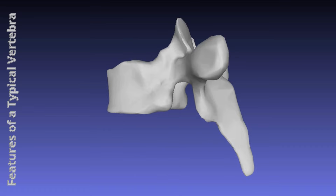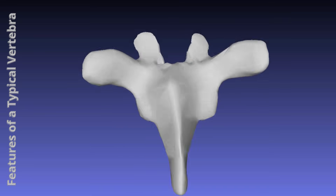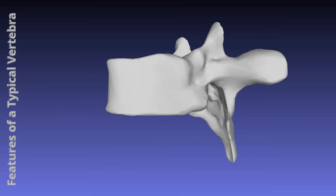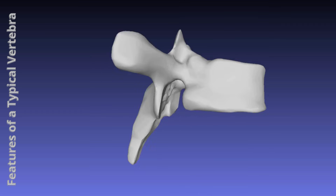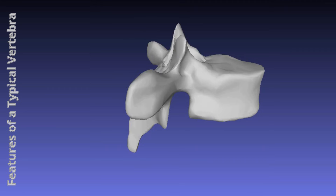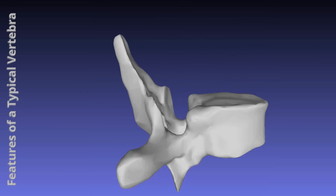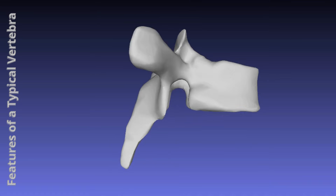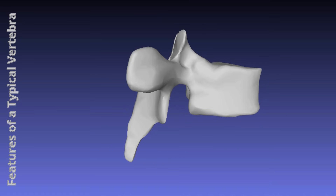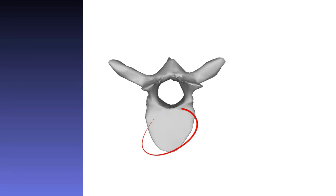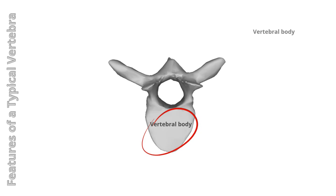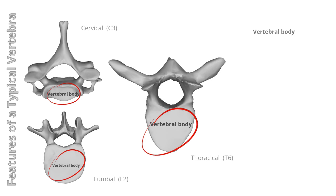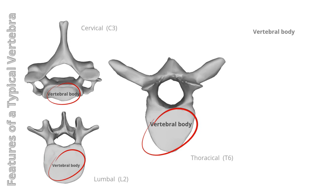Now that we have a general understanding of the structure and regions of the spine, let's examine the characteristics of a typical vertebra in more detail. Most vertebrae share a basic structure consisting of a vertebral body, vertebral arch, and seven processes. The vertebral body is the front part and is a weight-bearing structure. Its size increases as the column descends, making lumbar vertebral bodies larger than cervical ones. The bodies are separated by intervertebral discs and contain costal facets unique to the thoracic vertebrae.